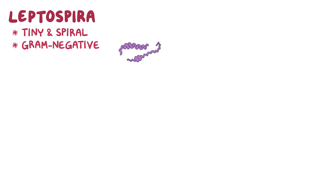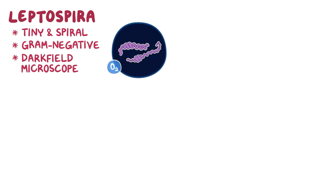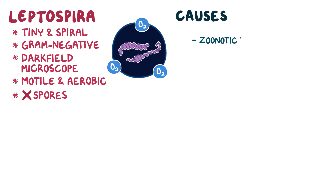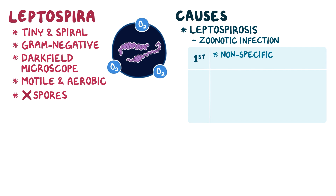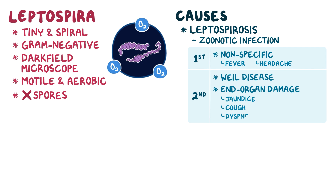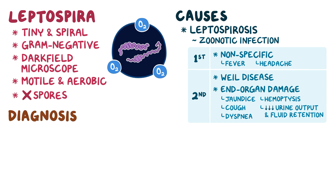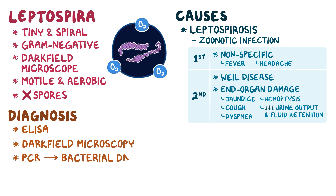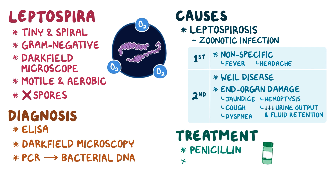As a quick recap, leptospira is a genus of tiny spiral gram-negative bacteria that can be seen under a dark field microscope. It's a modal aerobic bacteria, and it doesn't form spores. Leptospira causes a zoonotic infection called leptospirosis, which has two phases. During the first phase, there are nonspecific symptoms like fever and headache. During the second phase, also called Weil's disease, there may be signs of end-organ damage like jaundice, a cough, dyspnea, and hemoptysis, reduced urine output, and fluid retention, depending on the affected organs. Diagnosis is done with ELISA, by visualizing the bacteria under dark field microscopy, or with PCR to detect bacterial DNA. Treatment is done with penicillin G or doxycycline.